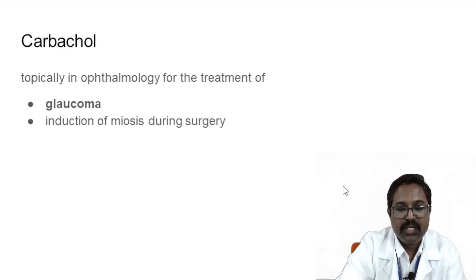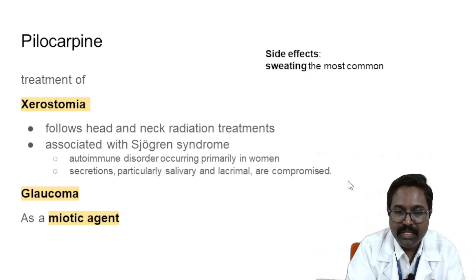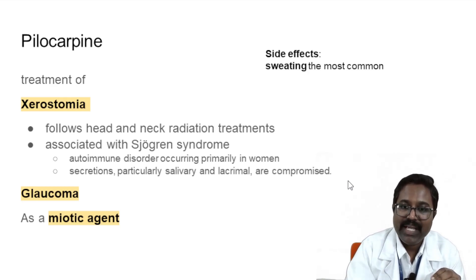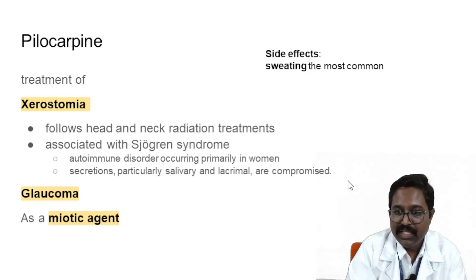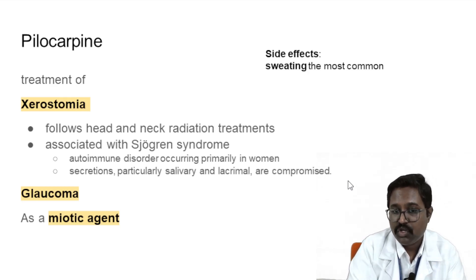Carbachol can be used topically in ophthalmology for treatment of glaucoma and for induction of miosis during ophthalmological surgeries. Pilocarpine is a very important drug — it acts on M3 receptors in the salivary gland and can be used in xerostomia as a sialogogue agent to increase secretion. It is useful in xerostomia following head and neck radiation and in xerostomia associated with Sjögren's syndrome — an autoimmune disorder occurring particularly in females, causing decreased secretion from salivary and lacrimal glands. Pilocarpine can also be used in glaucoma as a miotic agent. The most common side effect is sweating.